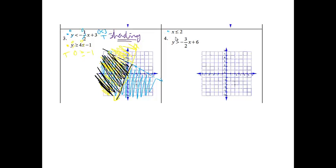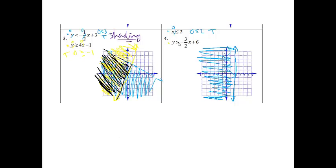The next problem: x is less than or equal to 2. An x-equals line is a vertical line, and it's a solid line because there's an equal sign. Testing (0, 0), I get 0 is less than or equal to 2 — that is true, so I shade the side with (0, 0). For the second inequality, I start up at 6 and go down 3, over 2, down 3, over 2. I make a dashed line because there's no equal sign. Testing (0, 0), I get 0 is bigger than 6 — that is not true, so I shade the other side.